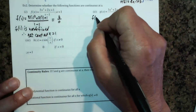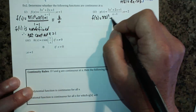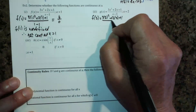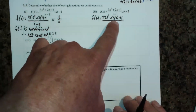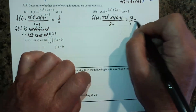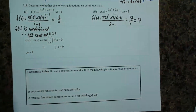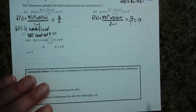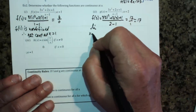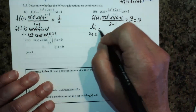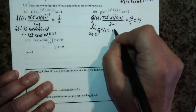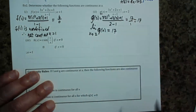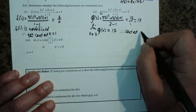Let's try x equals two. F(2) is going to be four times three, which is 12, plus 4 is 16 — so this gives us 17 over 1, which is 17. That's defined. And the limit as x approaches 2 of G(x) is also 17, because when we plug it in there are no problems. Therefore, G is continuous at x equals 2.